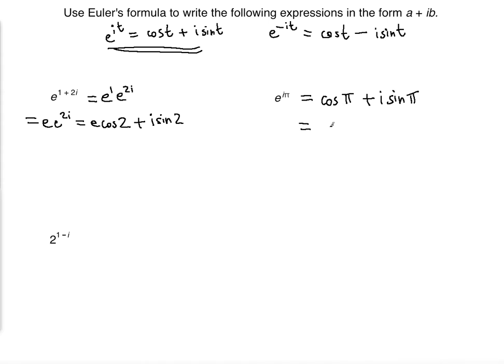Which is equal to, now cosine of pi is negative 1. So I can just write negative 1 plus i sine of pi is 0. So negative 1 plus 0 is negative 1. There you go. That's your value.